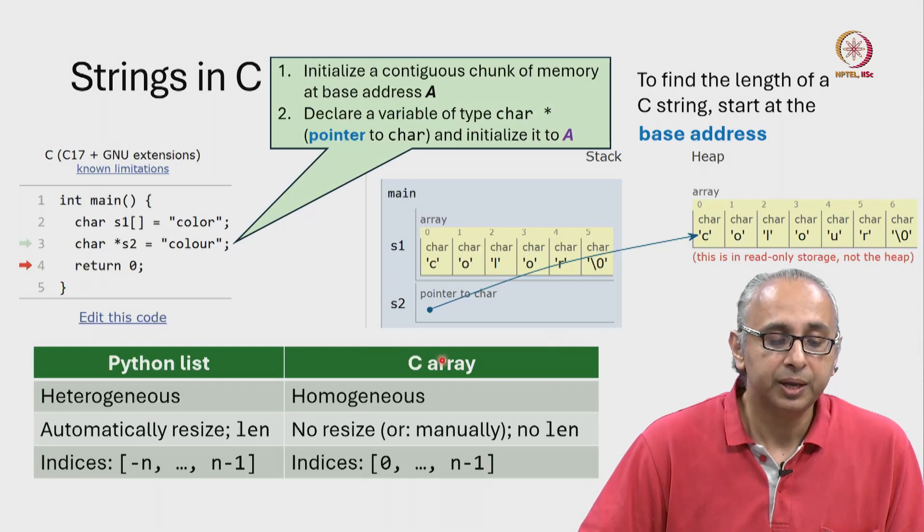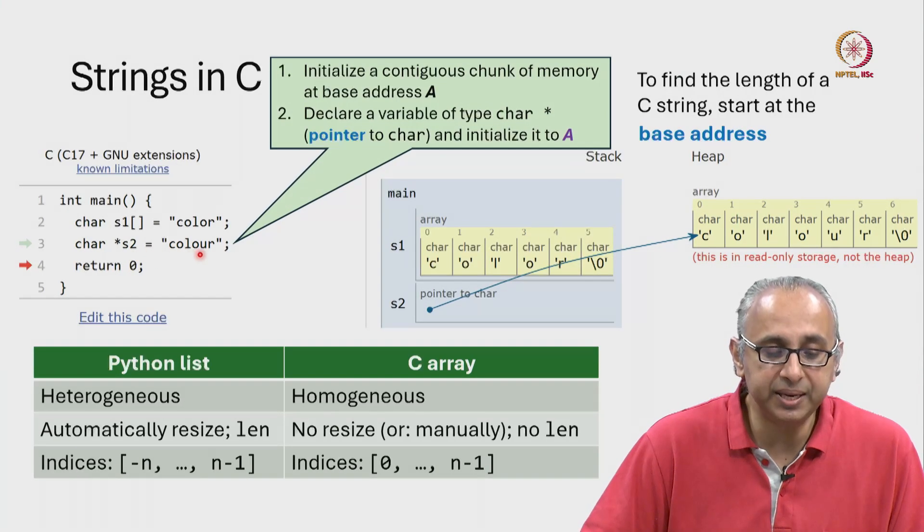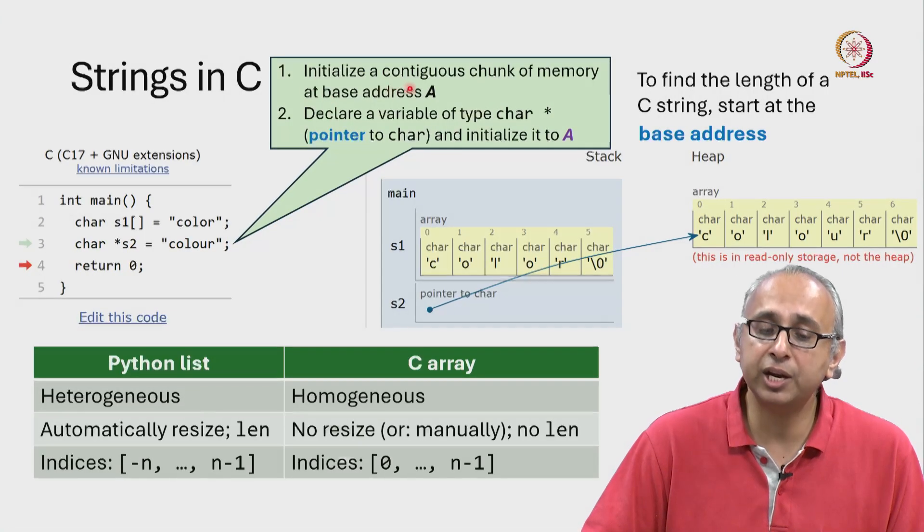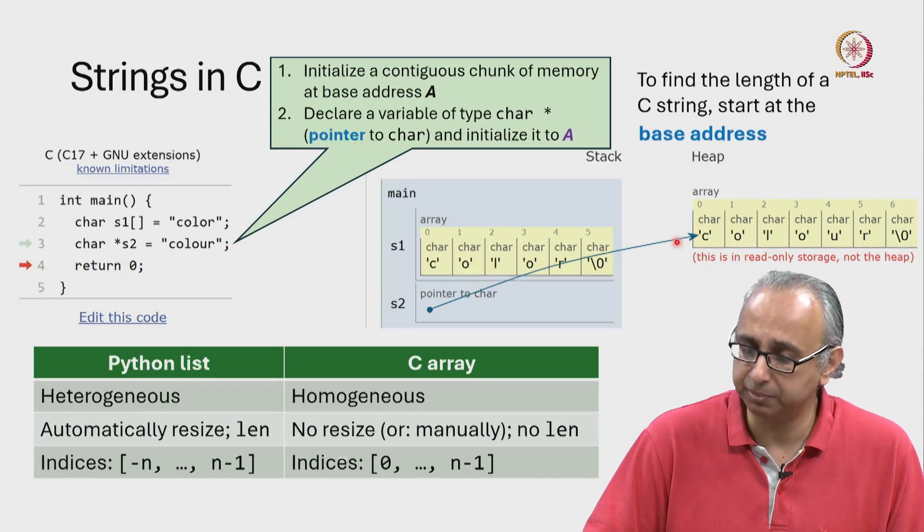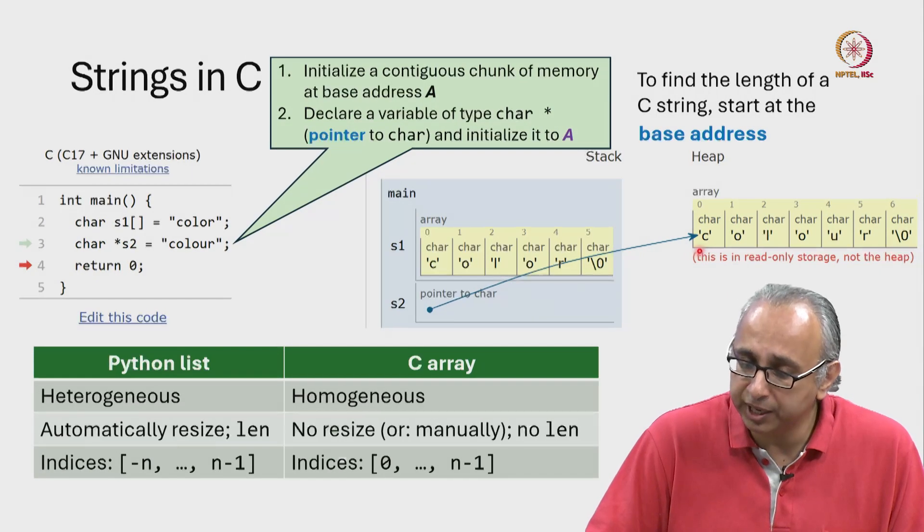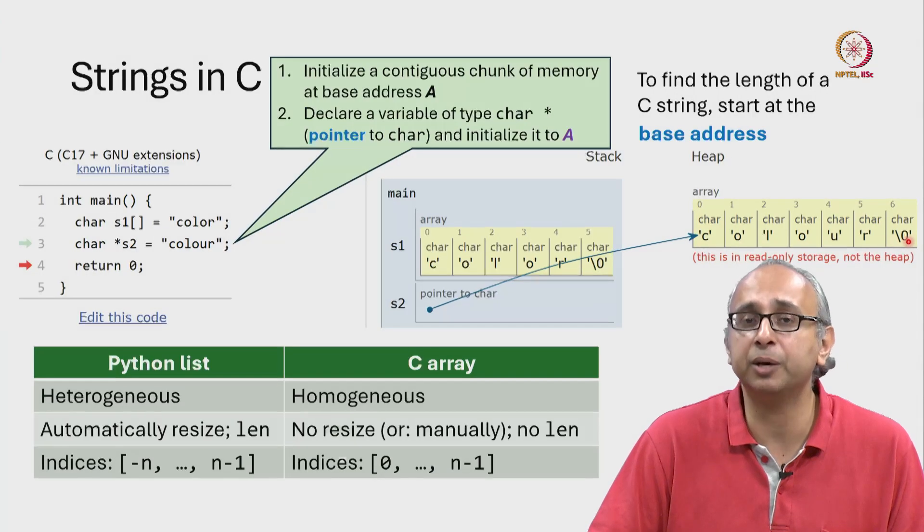For now, let us understand that the meaning of this statement is actually two things. Firstly, initialize a contiguous chunk of memory at base address A, just like we did before. So in this case, we found a chunk of contiguous memory and initialized all the characters in it appropriately.